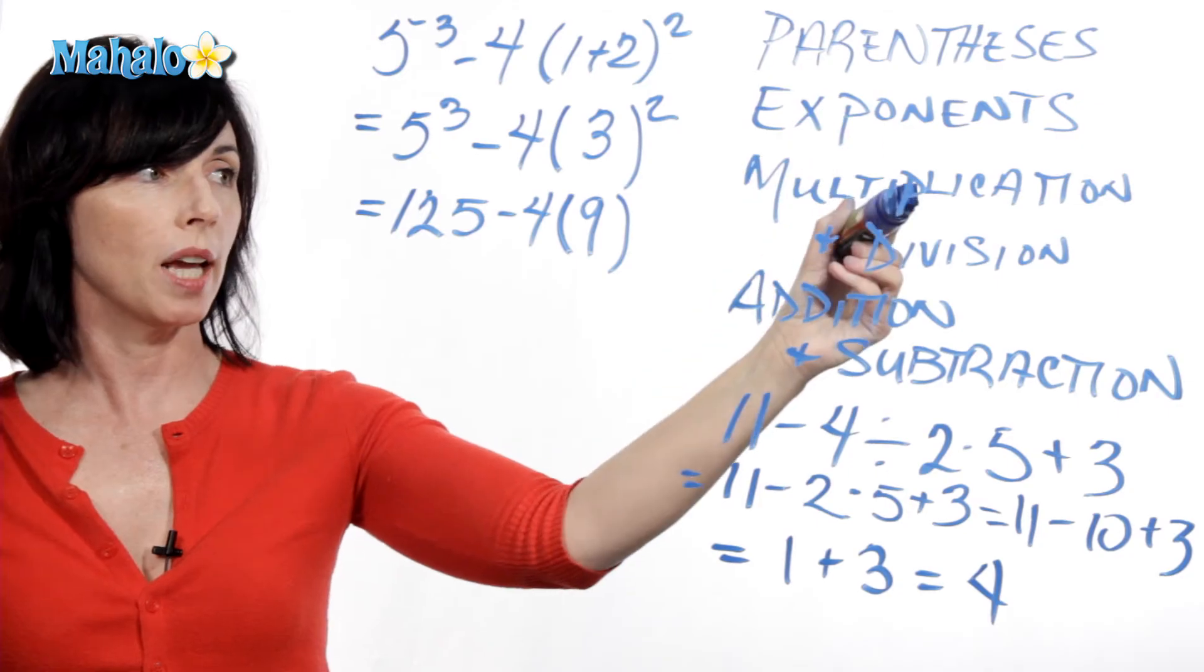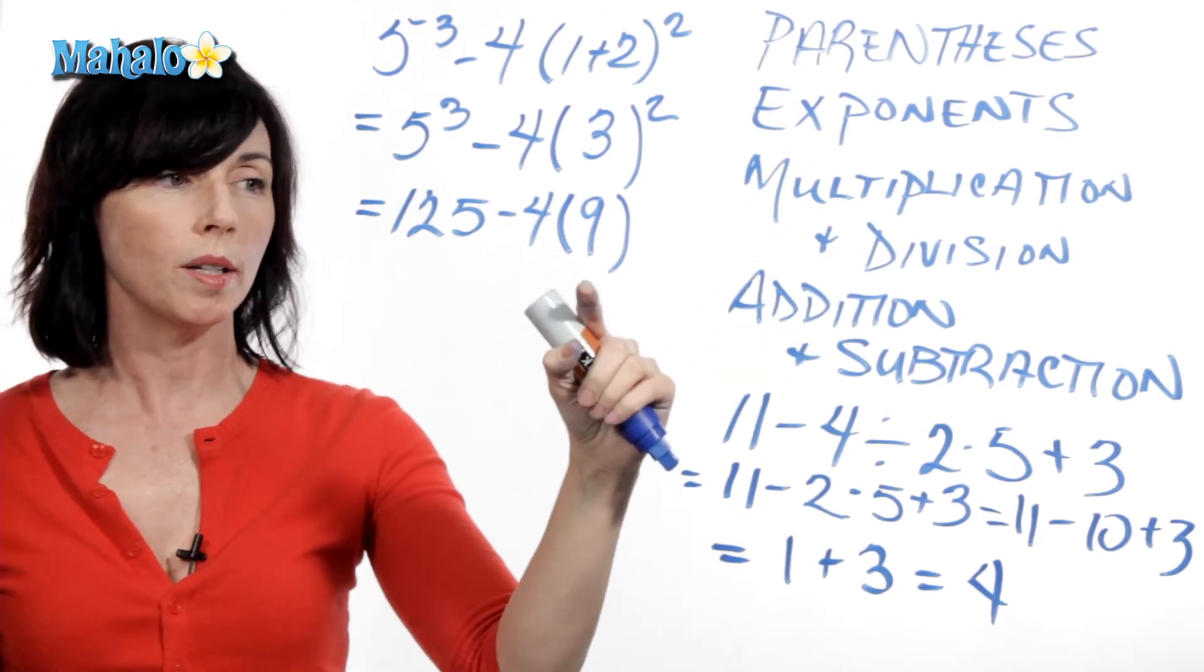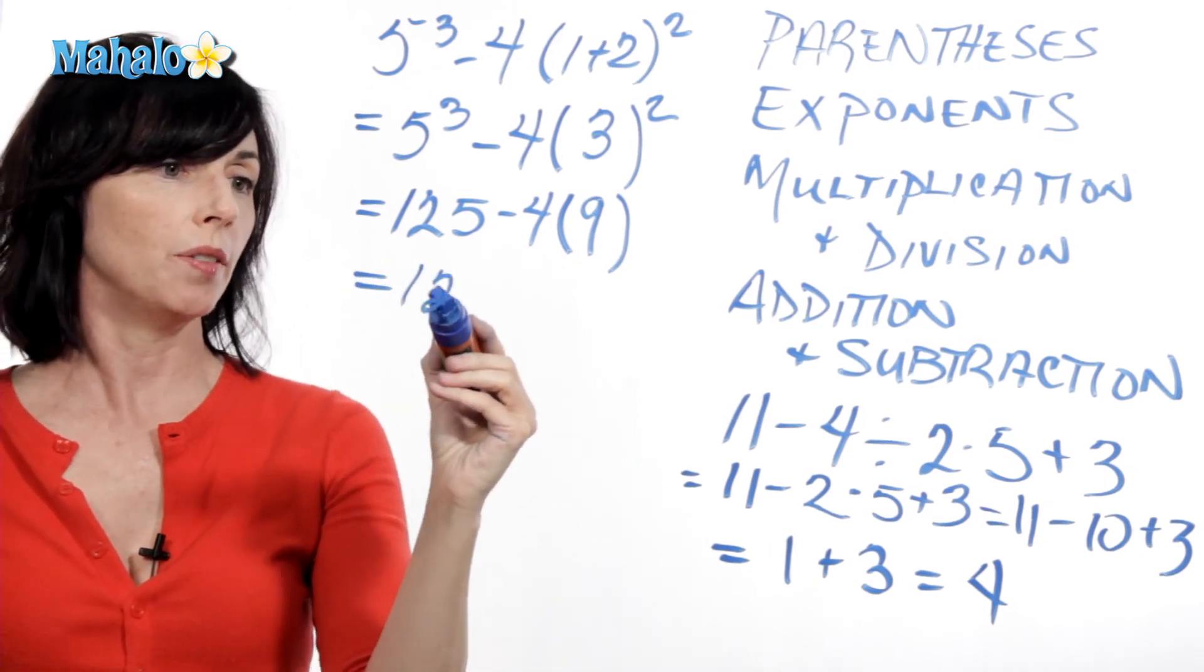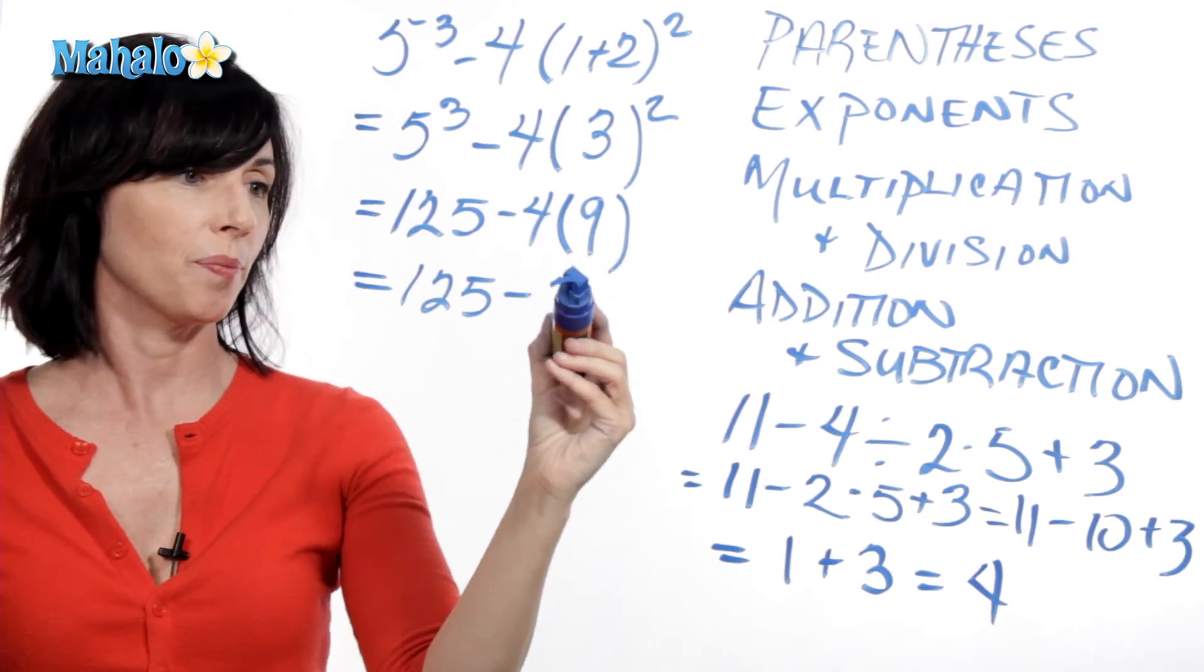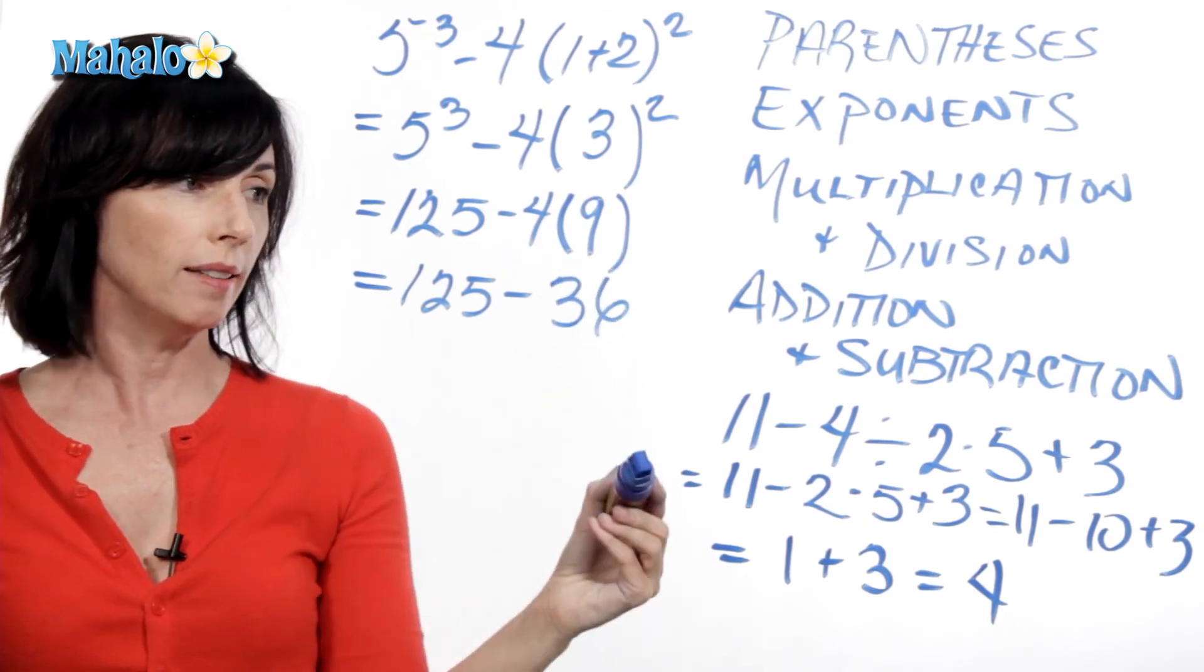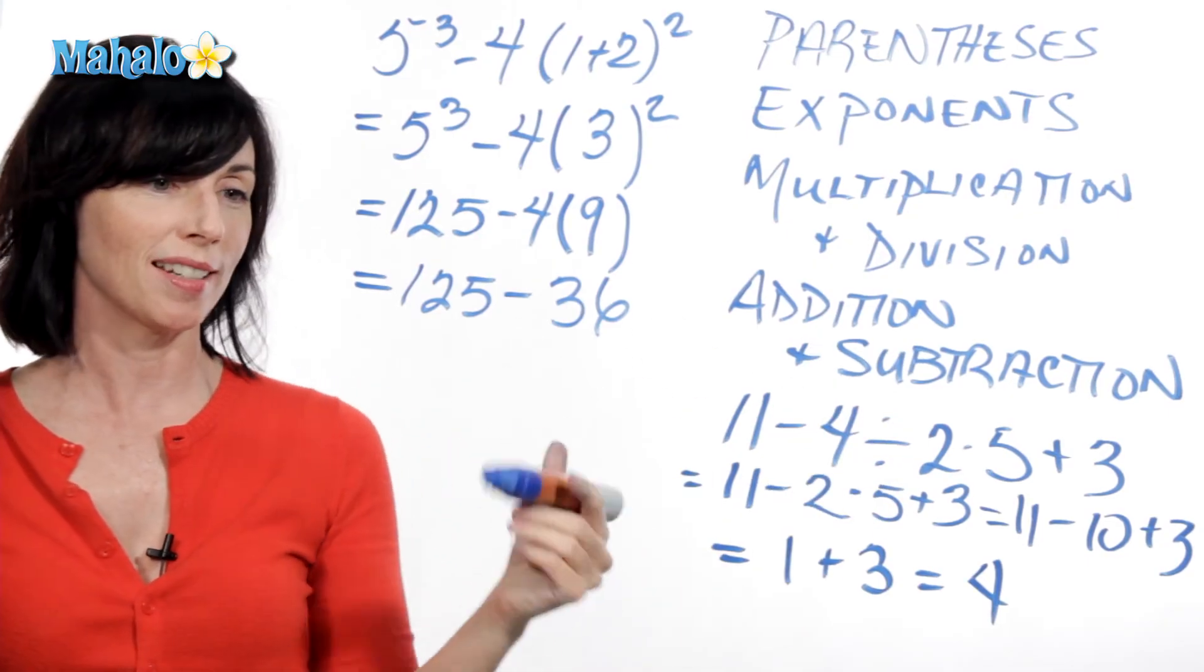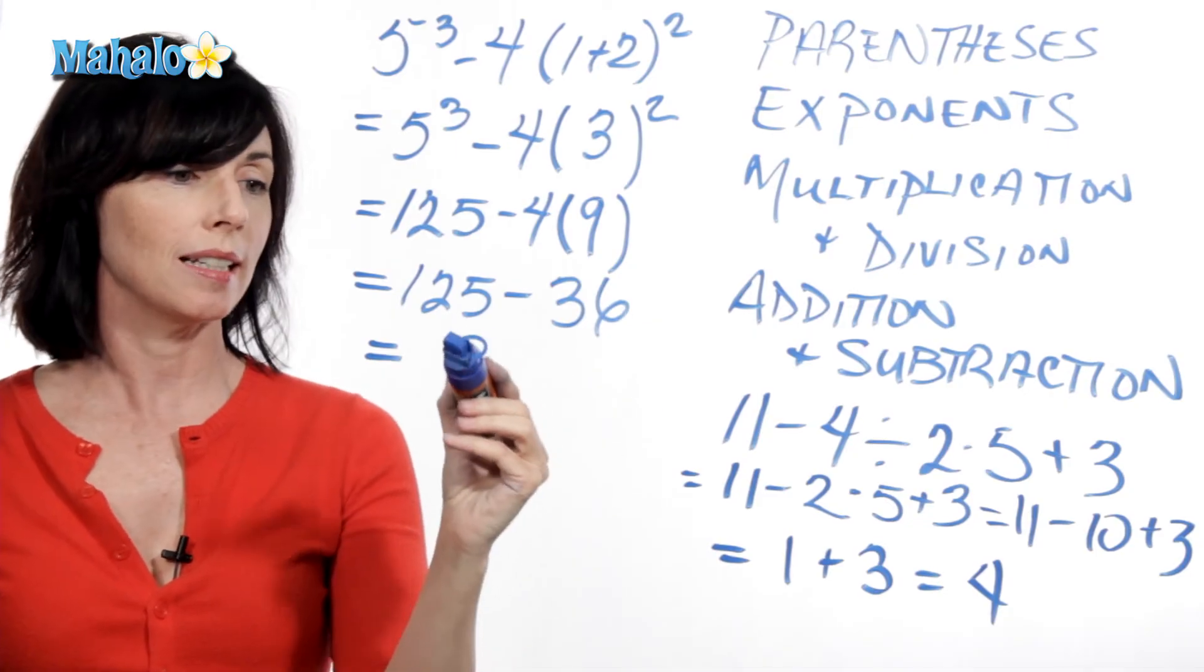Okay, so now we go down to multiplication and division from left to right. All I have is this one multiplication here. 125 minus 4 times 9 is 36. Okay, and now we do addition and subtraction from left to right. We just have some subtraction here. 125 minus 36 is 89.